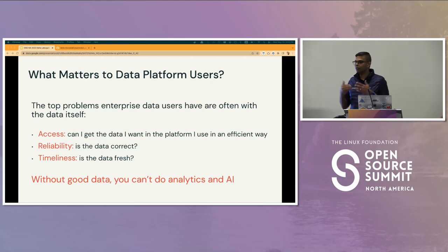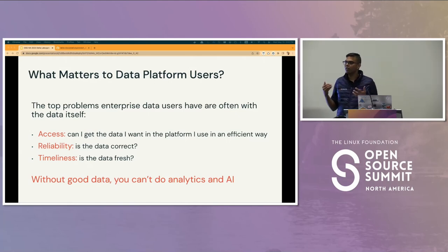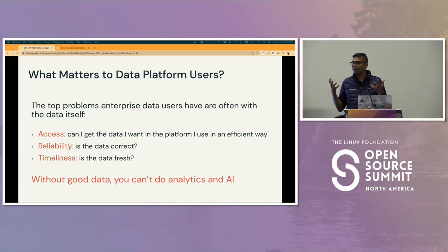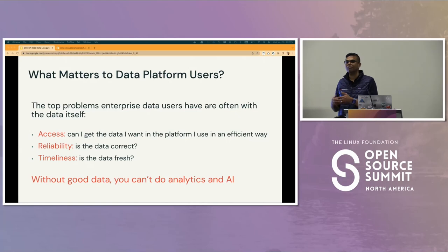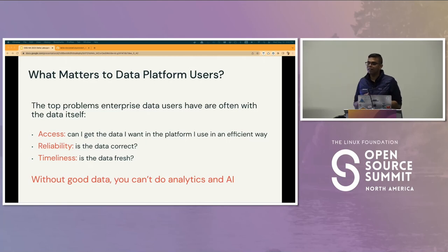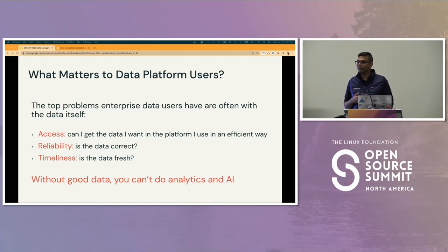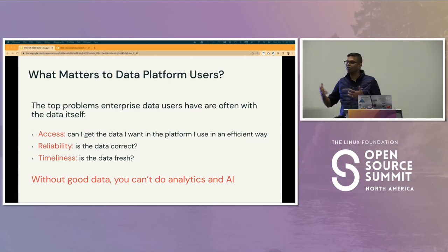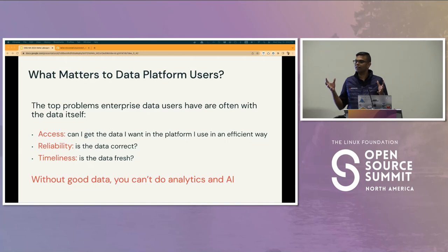The first challenge we often see is: how do we access the data? How do we even get data into a platform in an efficient way? The second one is reliability — can I really trust this data? As a downstream consumer, did a job fail or corrupt data? Has the schema changed? The third is timeliness. If I have a job that refreshes my table daily, then real-time analytics is a non-starter. Papers from Kaggle and Google confirm that even data scientists spend a lot of their time dealing with how to get good data.